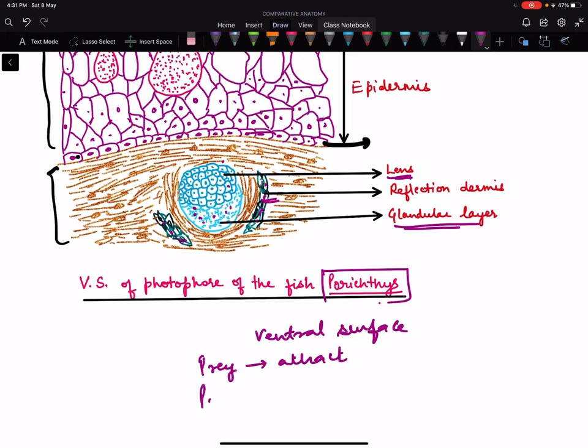Second, large fishes or predatory fishes are warned so that the predatory fishes stay away from that fish and thus provide protection to Porichthys. This is how photophores work in fishes.